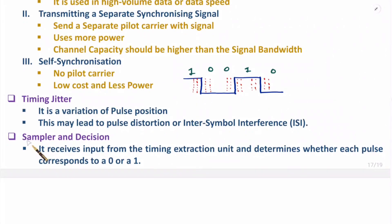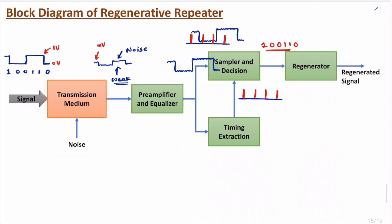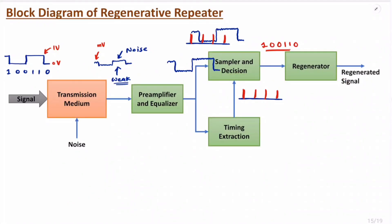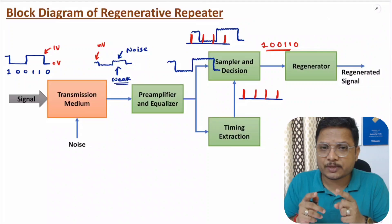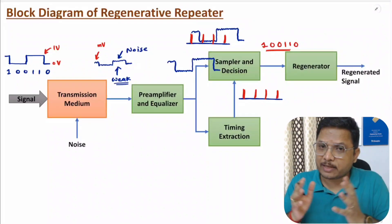At last, we take a decision with the use of the sampler and decision circuit, the timing extraction unit, and the received signal. After preamplification and equalization, and with the timing extraction output, we take a decision at given instances whether it is zero or one. We will then have digital data, and this digital data is given to the regenerator, which regenerates this digital signal again. That is how all these elements work within the regenerative repeater. I hope you have enjoyed this session. If you have any confusion, just place it in the comment section — I'll be happy to help. Thank you so much for watching this video.